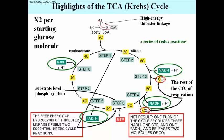The net result of one turn of the Krebs cycle is to produce three NADHs, a single molecule of GTP in higher organisms or ATP in bacteria, one FADH2, and the release of two molecules of carbon dioxide. Remember, just multiply everything by 2 per glucose that you started with.